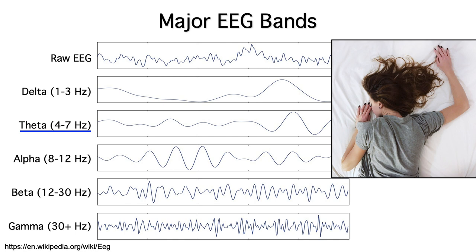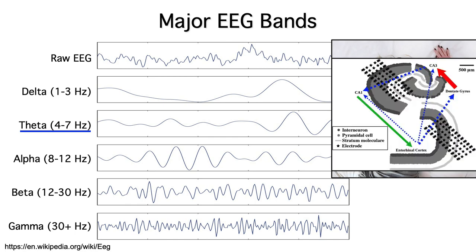Theta band oscillations are prominent in microelectrode recordings from the hippocampus in animals, but you can't see hippocampal theta on the scalp. However, you can see theta band oscillations that are generated in neocortical areas, such as the prefrontal cortex.